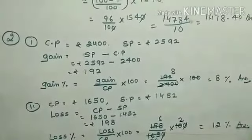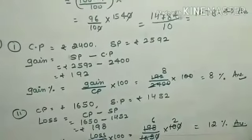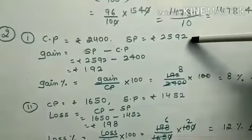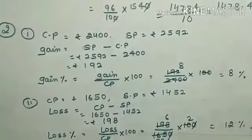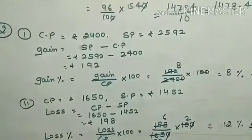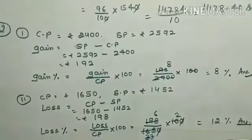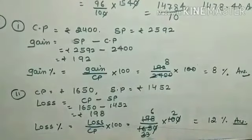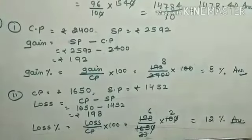Question number 2: Find the gain or loss percent. CP = ₹2400, SP = ₹2592. Since SP is greater than CP, this is a gain. Gain = SP − CP = 2592 − 2400 = ₹192. Gain% = (Gain ÷ CP) × 100 = (192 ÷ 2400) × 100 = 8%.